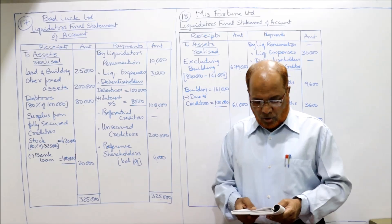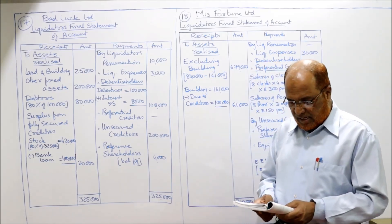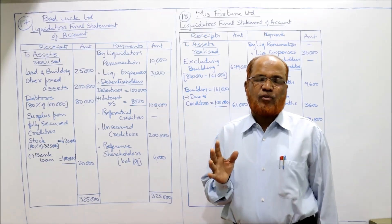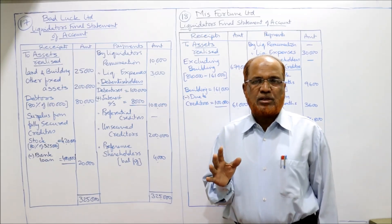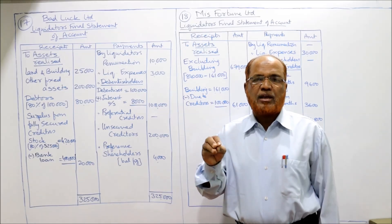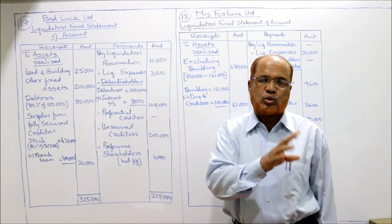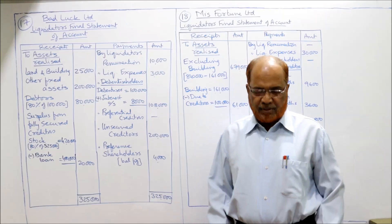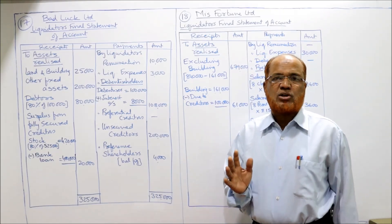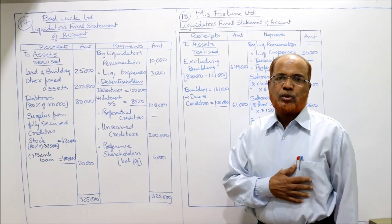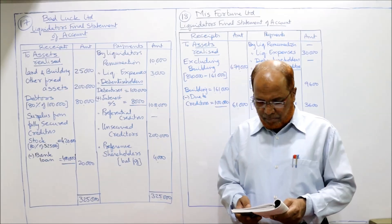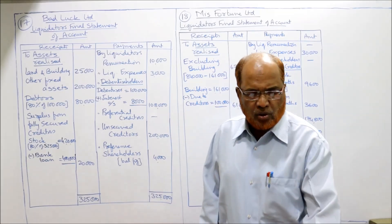Bank loan on the liability side is 4,00,000. The banker will sell the stock at 4,20,000, take back their loan of 4,00,000, and the remaining 20,000 rupees will be returned to the liquidator. For debtors — 1 lakh rupees given, but 80% of current assets are realizable, so 80% of 1 lakh = 80,000 will be realized from debtors.